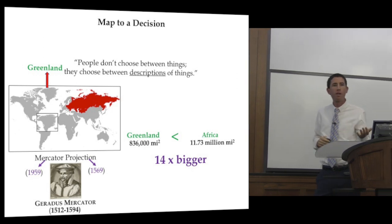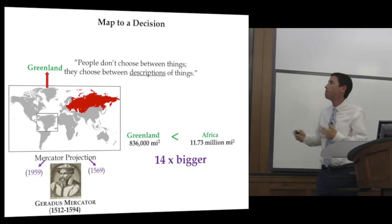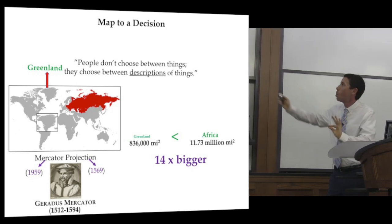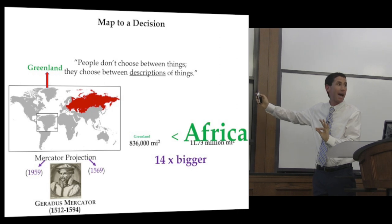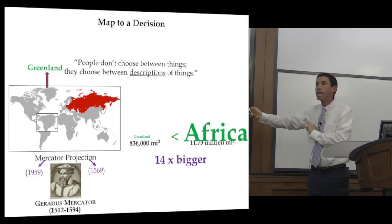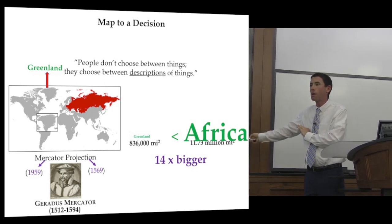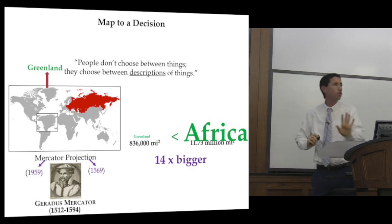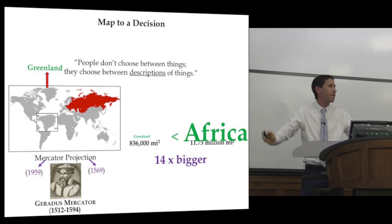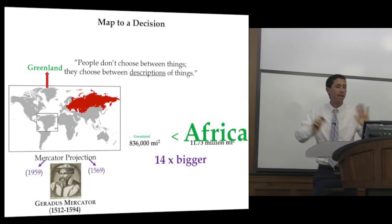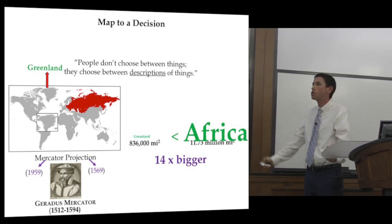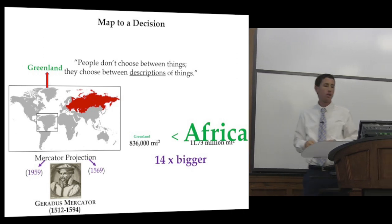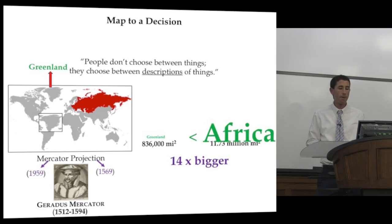A better representation of this relationship might be something like really tiny Greenland, really big Africa. If you're trying to make that point to someone, that's how you want to describe it. Don't just assume that you have to keep them in the same font. Don't just assume that you have to use language that you inherited.